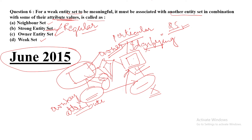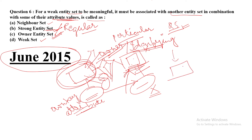How do we distinguish between strong entity set and owner entity set? A strong entity set only has its own key attributes and is not supporting any weak entity set — in that case it is called a strong or regular entity set. But if a strong entity set is supporting a weak entity set, then it is called an owner entity set or identifying entity set. Note that every strong entity set is not necessarily an owner entity set.